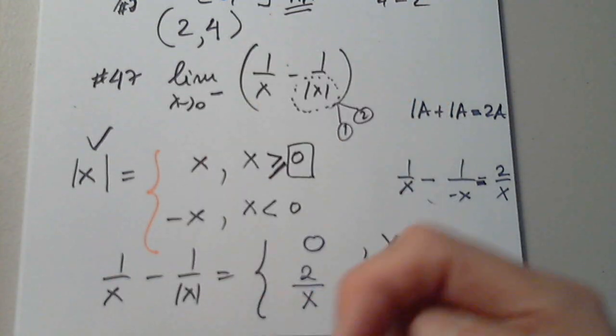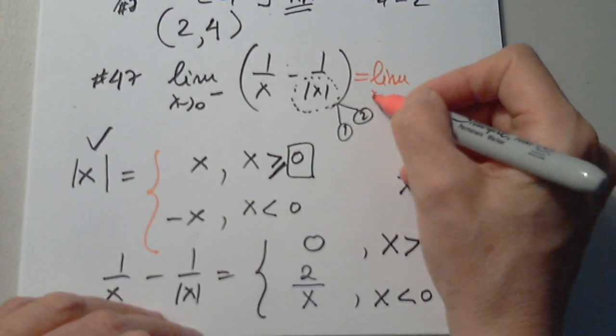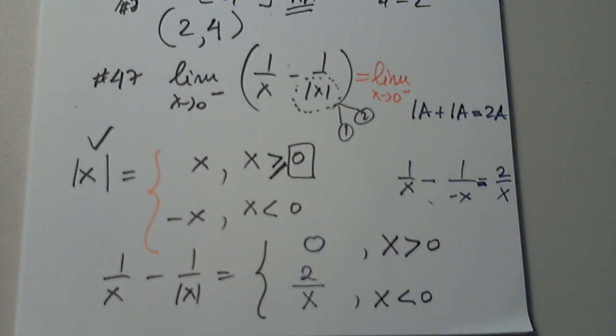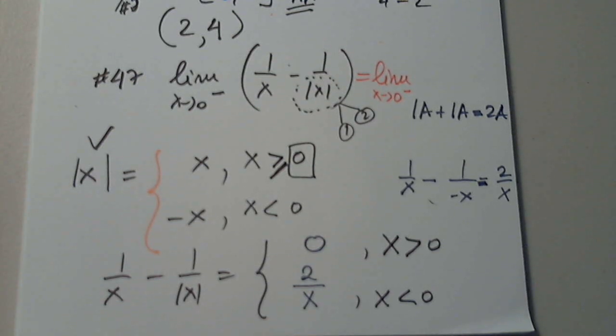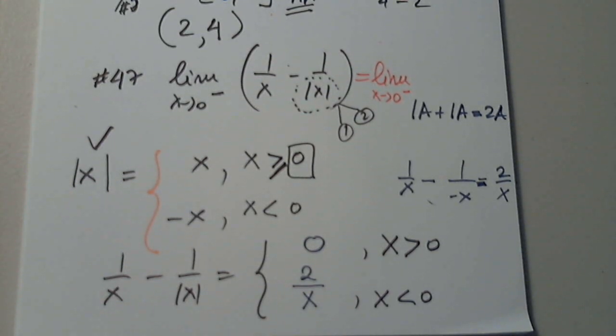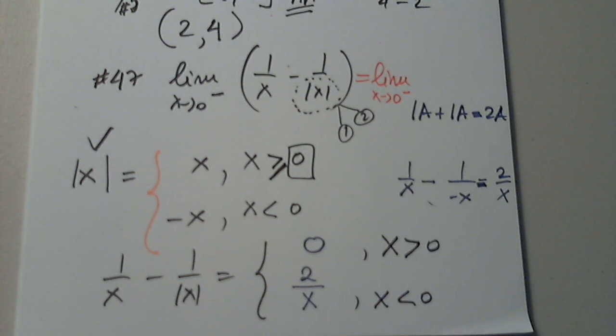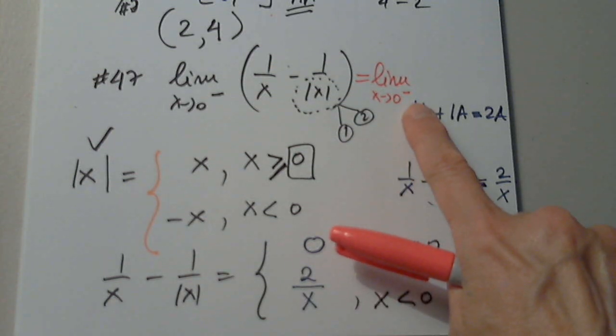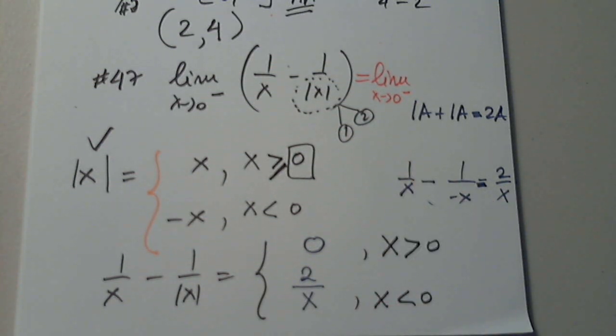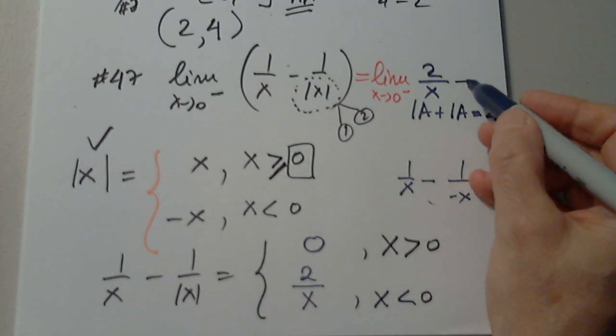So this limit of this function, when x approaches 0 from the left, equals the limit as x approaches 0 from the left for which function exactly? It cannot be both. It's not possible. So 0 from the left. Which function I pick? I cannot pick both. I can only pick one. There is only one function for 0 from the left. That's 2 over x? Exactly. I cannot pick this. This is from the 0 from the right. I have to pick this one.